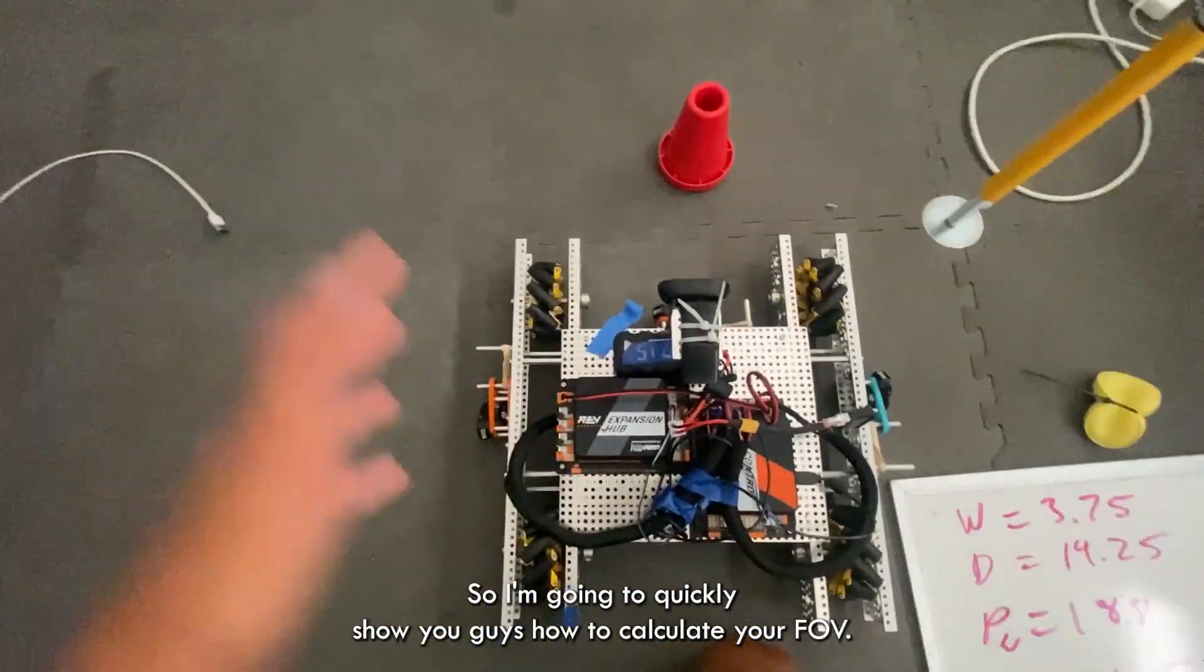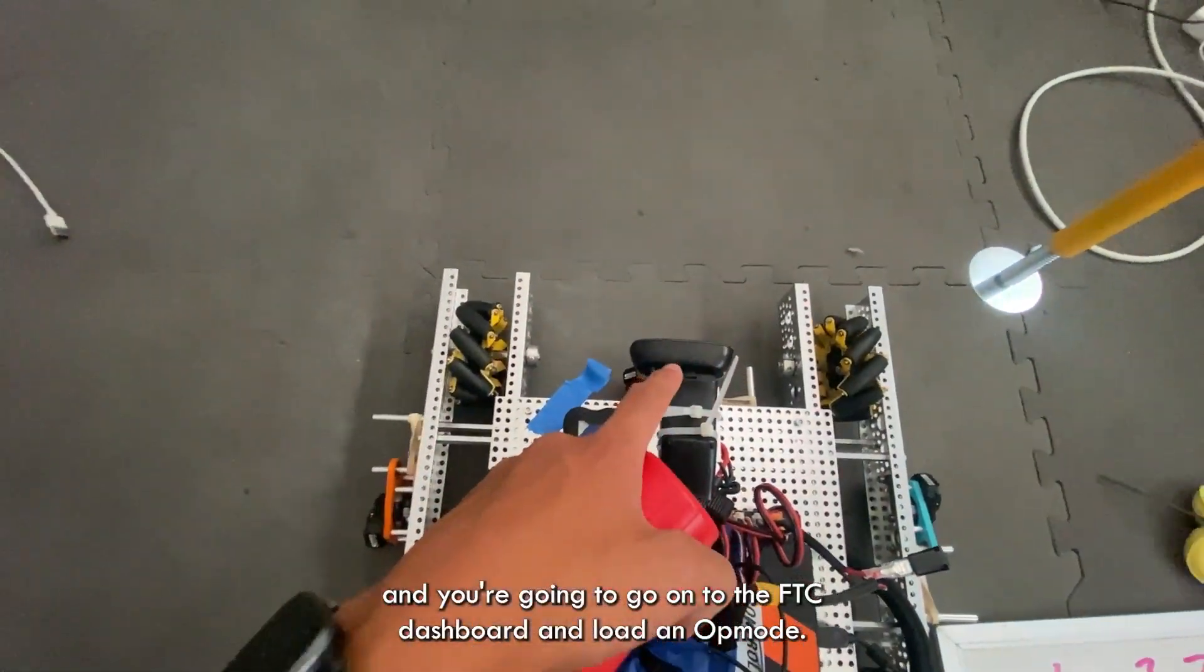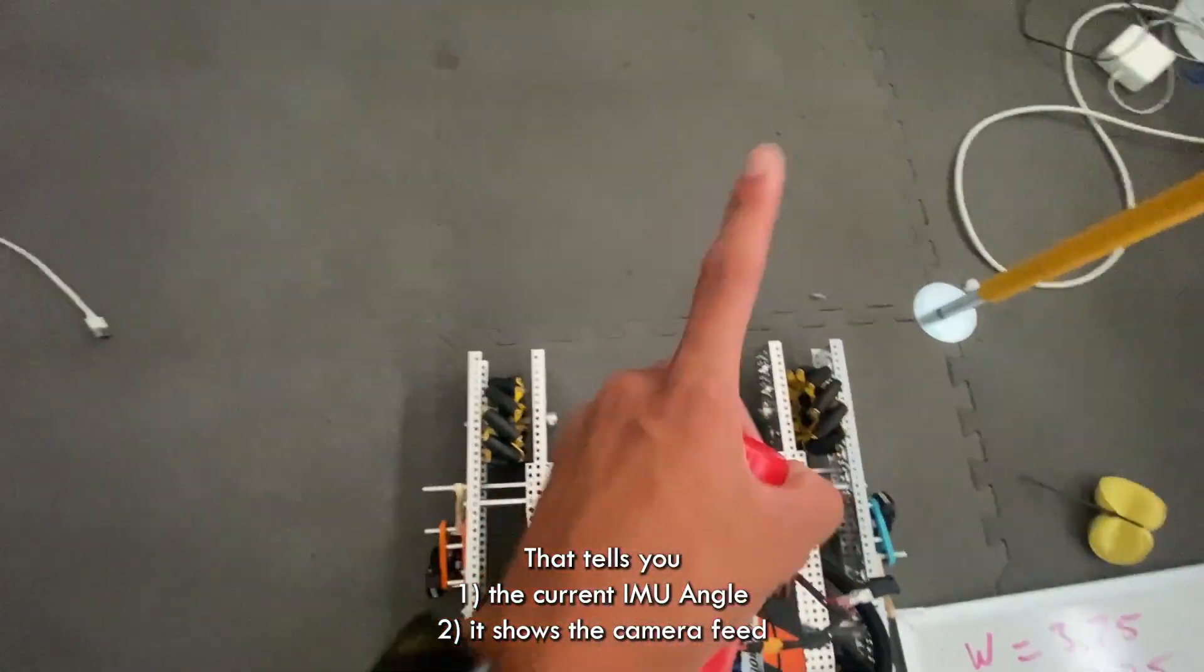Okay, so I'm going to quickly show you guys how to calculate your FOV. So the first thing you're going to do is take a cone and you're going to go onto the FTC dashboard and load an op mode that tells you one, the current IMU angle, and two, it shows the camera feed.